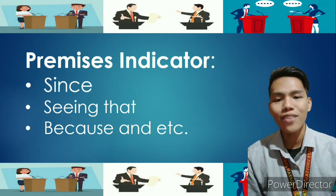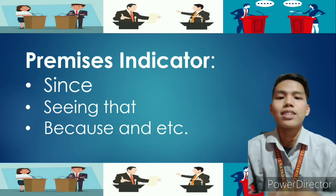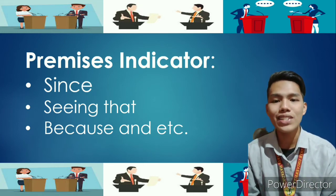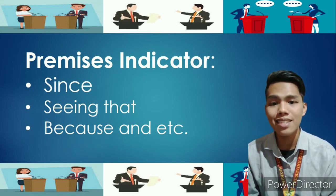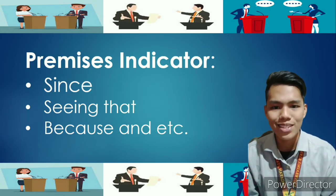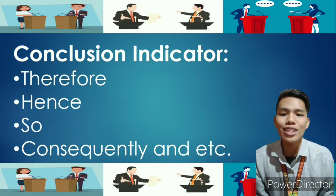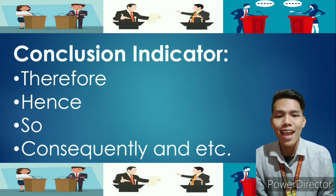But how can we identify whether a statement is a premise or a conclusion? The answer is we have indicators. First are the premise indicators, such as: since, because, seeing that, and many others. Some examples of conclusion indicators are: therefore, so, hence, consequently, and so on.